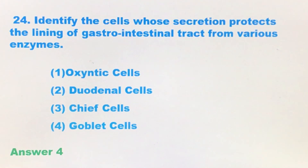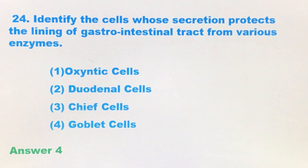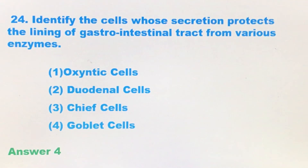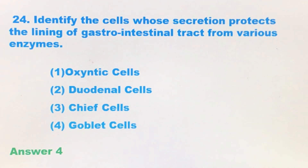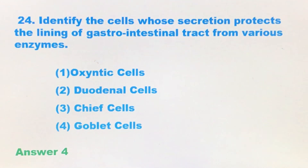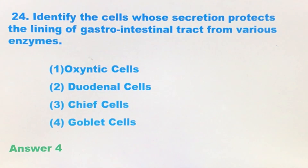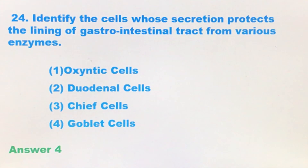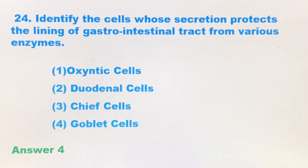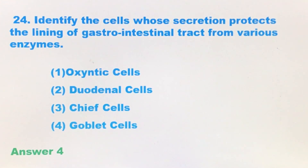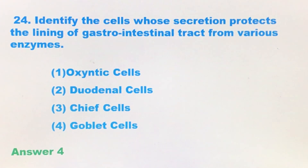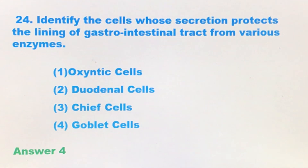We will have to find out which secretion protects the lining of the gastrointestinal tract. Now what is the gastrointestinal tract? The GI tract consists of the stomach, the small intestine, and the large intestine. Together, the stomach, small intestine, and large intestine are called the gastrointestinal tract.